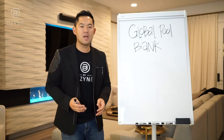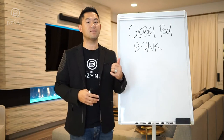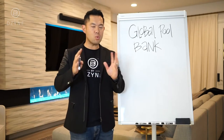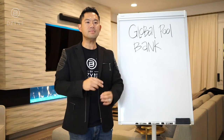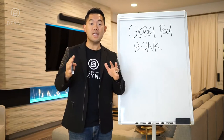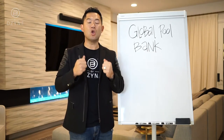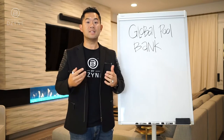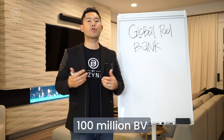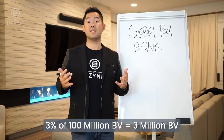So what is the Global Pool Bank? It's really simple: three percent of the global sales volume at the end of every cycle. A cycle runs from the 1st to the 15th of the month, and then from the 16th to the end of the month. At the end of every cycle, three percent of the global BV — which has nothing to do with your personal activity — gets pooled. So let's assume 100 million BV in a cycle: three percent of 100 million BV is three million BV.